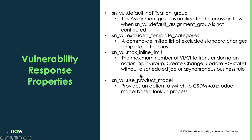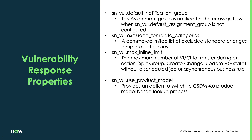The max inline limit is the maximum number of VIs and CIs to transfer during a split group, create change, or update the VG state. I probably wouldn't modify this too much because it could affect performance if you increase that number quite a bit. We also have use product model, which gives you the capability to switch to CSDM 4.0 if that is being used in the organization, to switch to those product models when doing any kind of lookup.